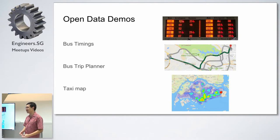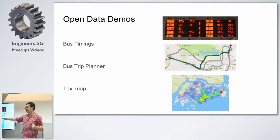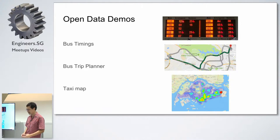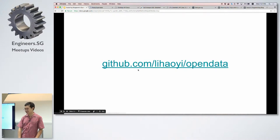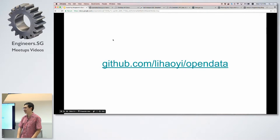For this presentation, I'll go through a few short demos of things you can build with the open data APIs. The three things are: we'll make a bus timing board similar to the ones you see at bus stops around Singapore; we'll make a bus trip planner that, given one bus stop and another, tells you which buses you can take to get there directly or with a transfer; and we'll make a taxi map showing where all the taxis are in Singapore. These examples are on GitHub at github.com/leehowie/open-data. The Python files are meant to be copy-pasted interactively so you can see the results — more of a guide than a one-off script.